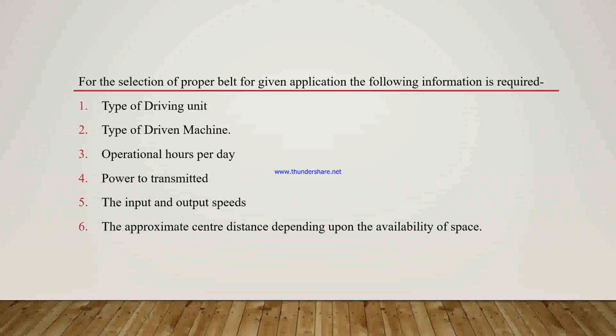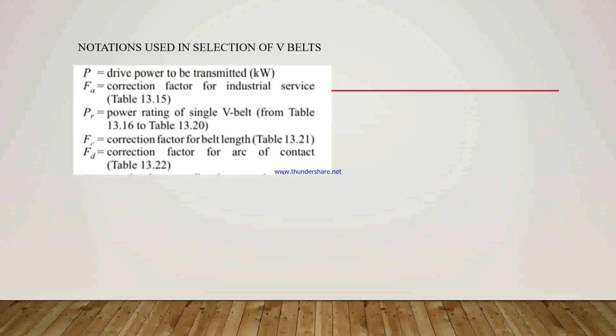For the selection of a proper belt for a given application, we require some data: the type of driving unit, type of driven machine, operational hours per day, power to be transmitted, input and output speeds, and the approximate center distance depending upon the availability of space between two pulleys. The notations used are: P is the drive power to be transmitted in kilowatt, FA is the correction factor for industrial service, PR is the power rating of a single V-belt, FC is the correction factor for belt length, and FD is the correction factor for arc of contact.